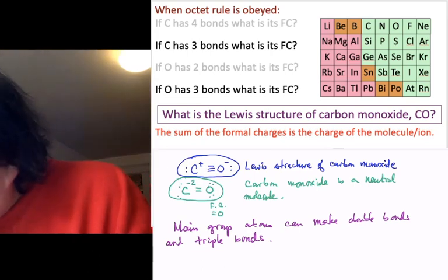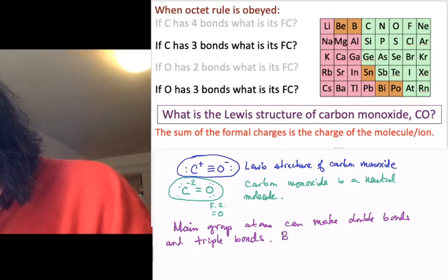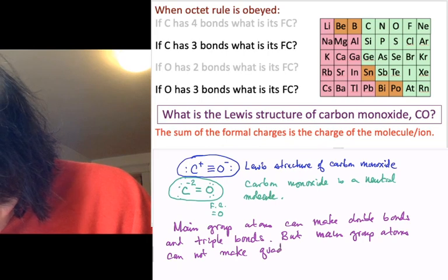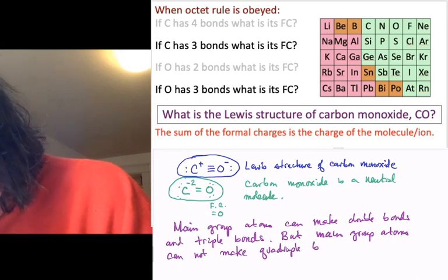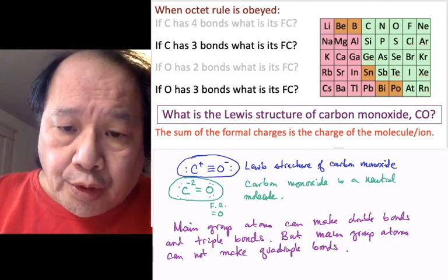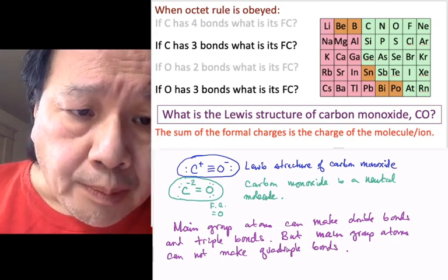It is a triple bond. But main group atoms cannot make quadruple bonds. Transition metals, by the way, can. So, that's one rule about main group multiple bonding.